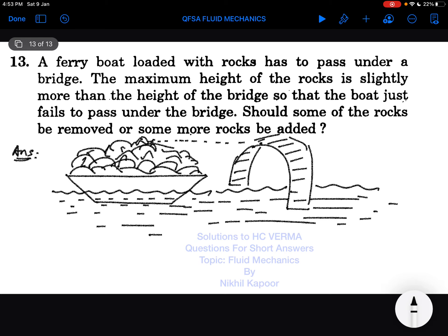The boat just fails to pass under the bridge. Obviously if the boat goes there this rock will get hit with the bridge, then the boat will fail to pass through. Should some rocks be removed or some rocks be added? We will take both conditions. First of all, if some rocks are removed.